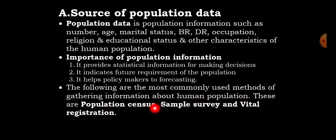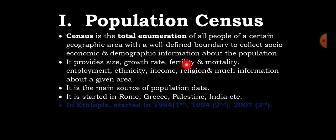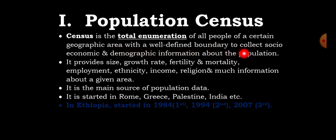The following are the most commonly used methods of gathering information about the human population: population census, sample survey, and vital registration. Let's see them one by one. Population census is the total enumeration of all people of a certain geographic area with a well-defined boundary.